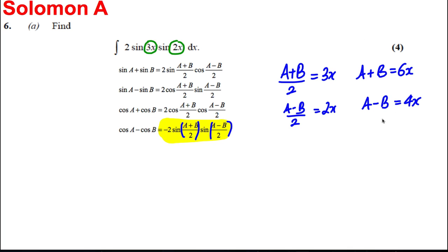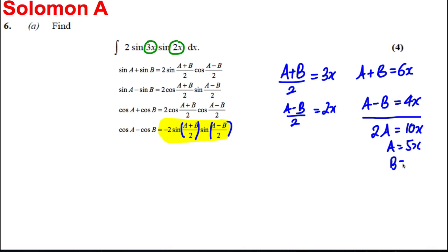These are quite easy to solve simultaneously — you could spot the answer or add them together. Adding gives 2a = 10x, so a = 5x. If a = 5x then b = x.